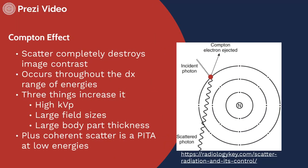A large part of scatter radiation comes out of what we call the Compton effect, and it contributes to a total destruction of image contrast. This occurs throughout the diagnostic range of energies, but as average beam energy increases, scatter radiation increases as well — it increases as a percentage of the remnant beam. So as kVp increases, we see a decrease in the percentage of photoelectric effect occurring inside the patient and an increase in the percentage of scatter.